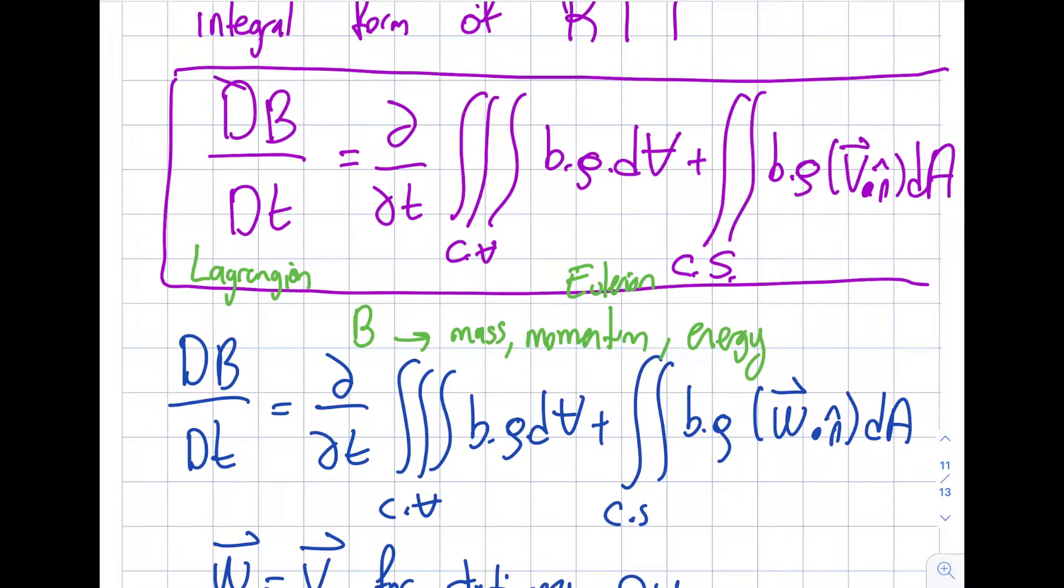And B will be the mass for module 5, it will be momentum for module 6, and it will be energy for module 7. And it is an extensive property. The lowercase b that I have on the right hand side will be capital B divided by mass, and that is called the corresponding intensive property.